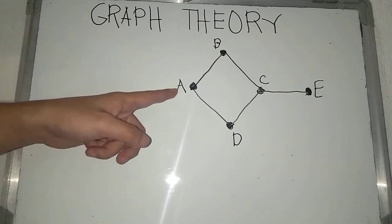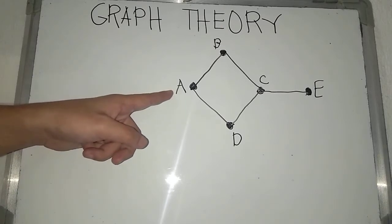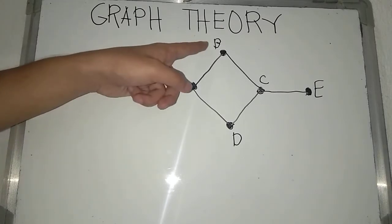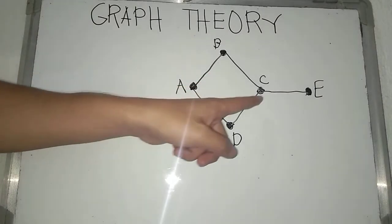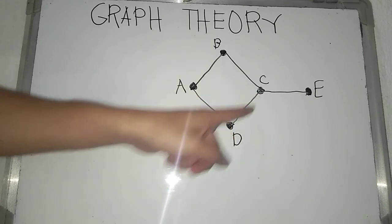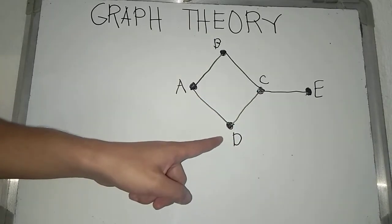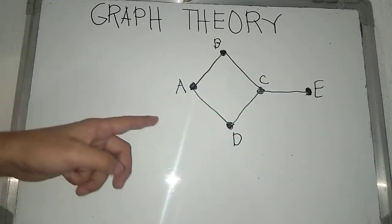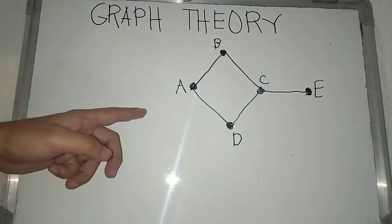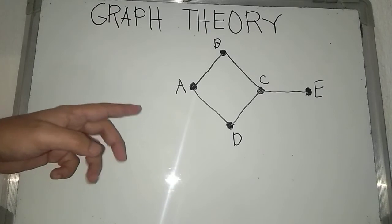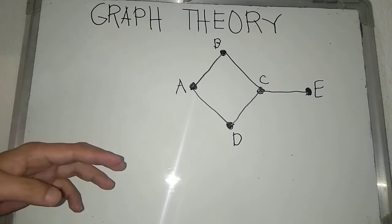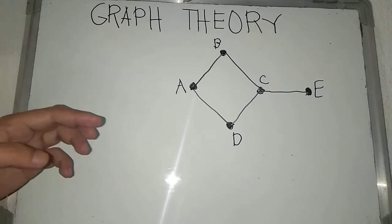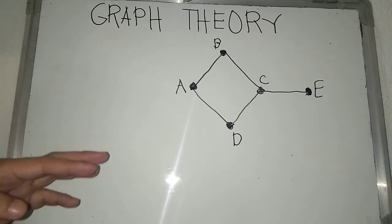Now, this is vertex A, vertex B, vertex C, vertex D, and vertex E. All are points or solid dots.